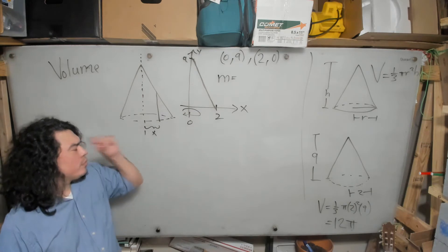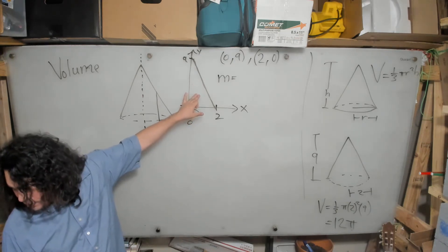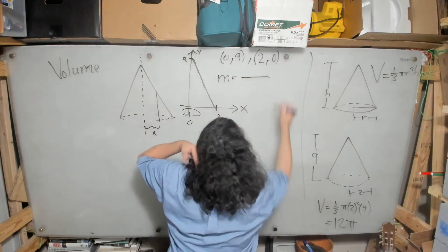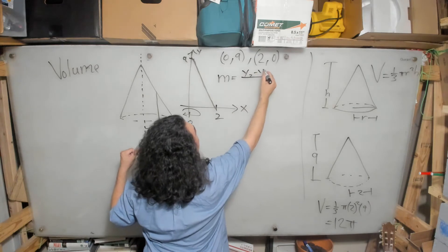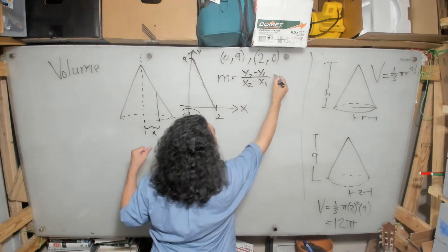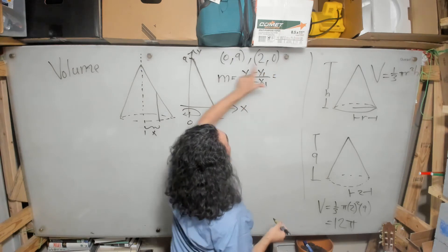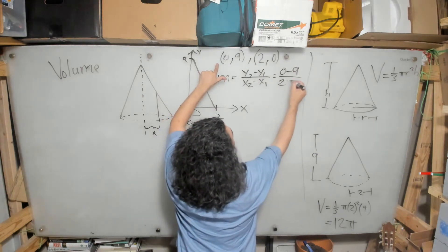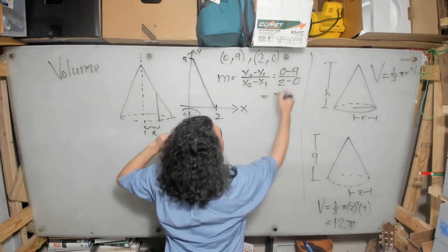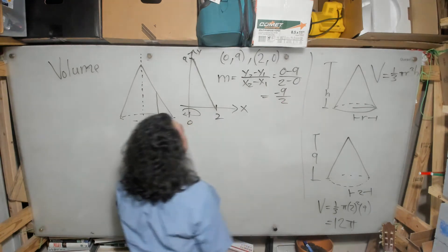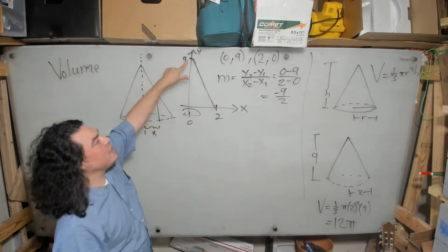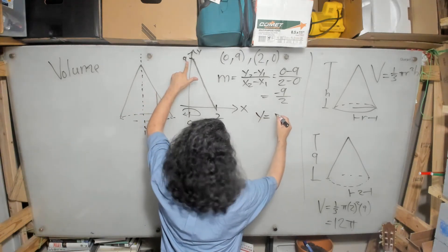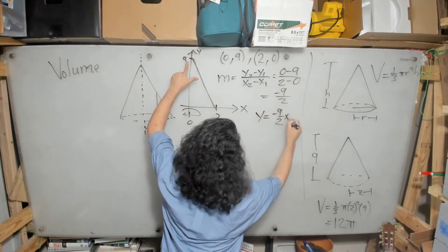We need to find the equation of this line. We calculate the slope: m = (y2 − y1)/(x2 − x1) = (0 − 9)/(2 − 0) = −9/2. The y-intercept is 9, so the equation of the line is y = −9/2 · x + 9.